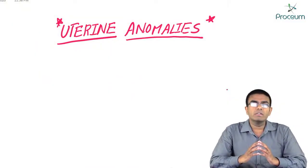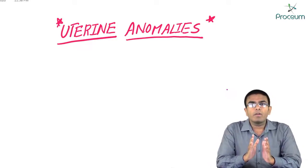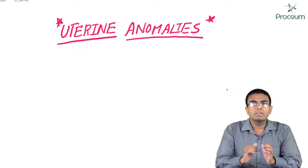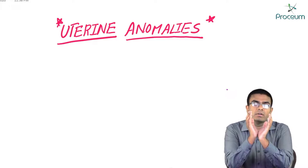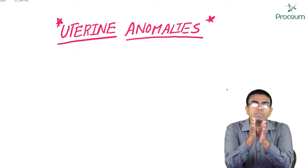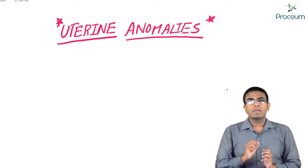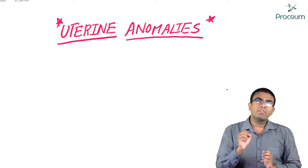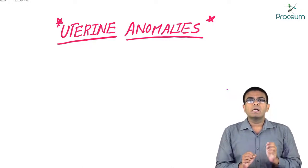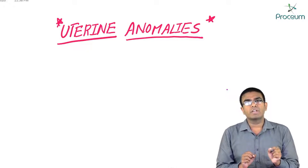Let's discuss uterine anomalies. In the previous video we saw that for the proper formation of the uterus, cervix, and vagina, there should be proper fusion of the two Mullerian ducts — the paramesonephric ducts. Failure in the fusion of these Mullerian ducts causes uterine anomalies.